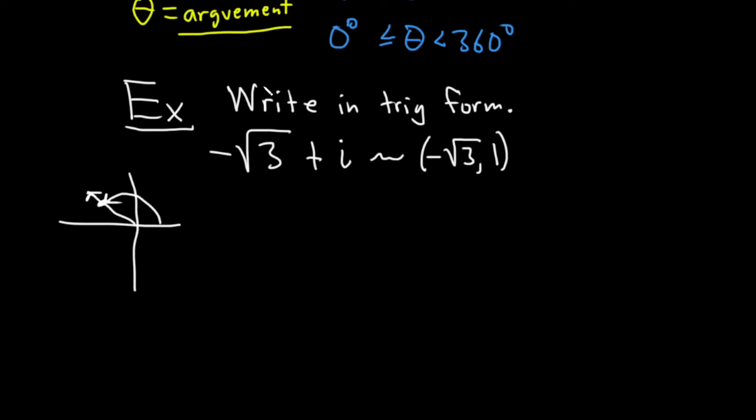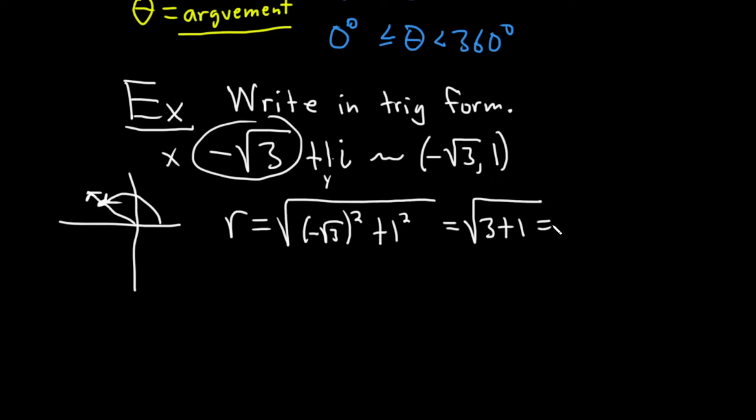The next thing I like to do in these problems is find the modulus. So there is a 1 here. So r is equal to the square root of... So x here, by the way, is negative root 3. And then y is equal to 1. This will be negative root 3 squared plus 1 squared. This is going to be the square root of 3 plus 1, which is the square root of 4, so you get 2. So r is 2. That's the modulus.